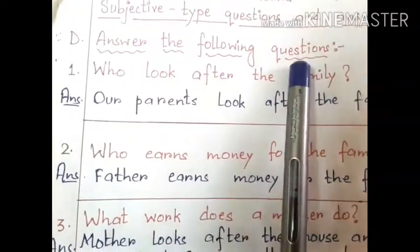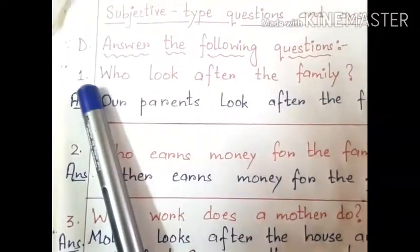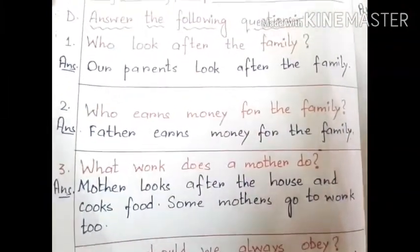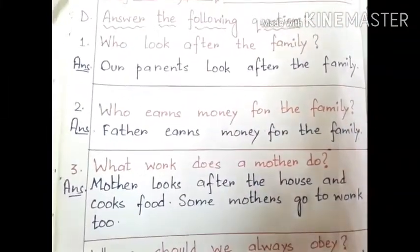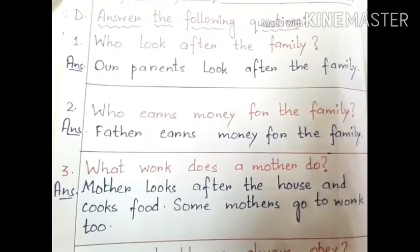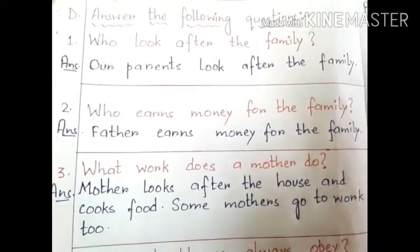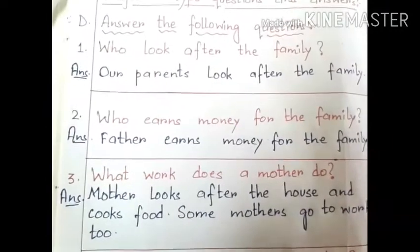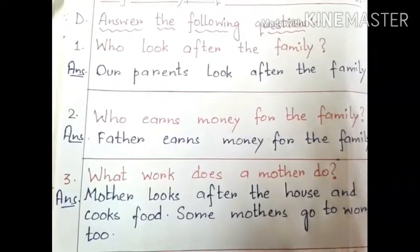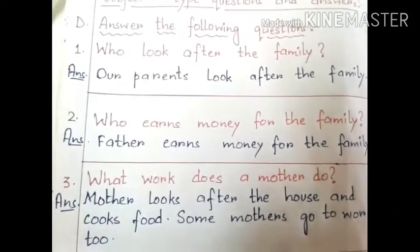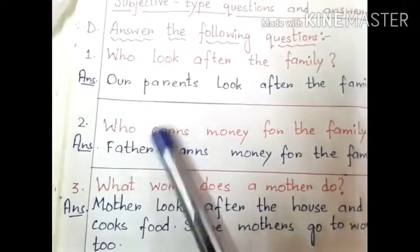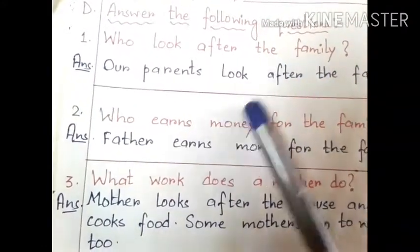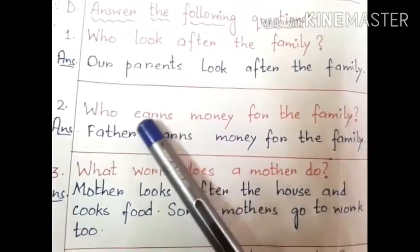Students, first you will write or jot down all the points in your copy. Jot down all the answers in your copy and then you can learn them — this will come in your exams. They are very important. So let's start. Number one: who looks after the family?